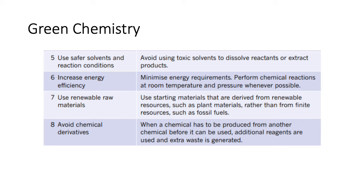Number seven: use renewable raw materials — use renewable resources to make your products. Number eight: avoid chemical derivatives. If you need chlorine gas for a particular reaction, don't get it from hydrogen chloride — just go get the chlorine gas directly. If you can skip steps by finding the pure substance somewhere else, that's preferable.